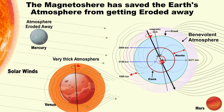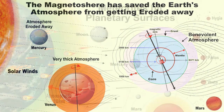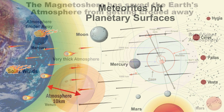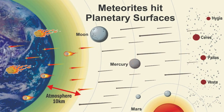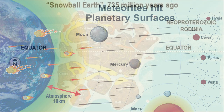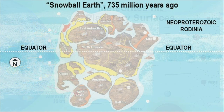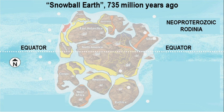The Earth's surface resembled that of its outer neighbor Mars, or the surfaces of the still farther located asteroids Pallas and Hygiea. This snow-enveloped appearance of our planet is often referred to as the Snowball Earth.